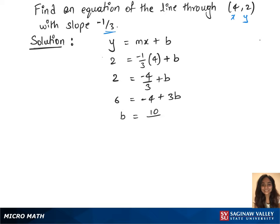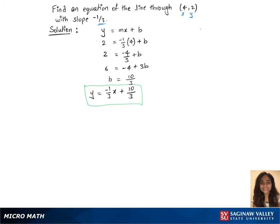We have the B value and the slope. Let's plug in the line formula which is y = -1/3x + 10/3. So that's the equation of the line.